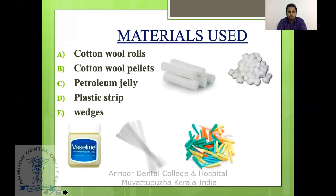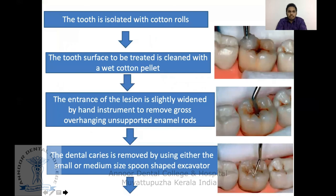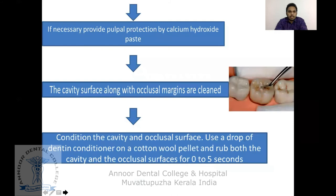The procedure for Atraumatic Restorative Treatment: First, the tooth is isolated with a cotton ball. The tooth surface to be treated is cleaned with a wet cotton pellet. The entrance of the lesion is slightly widened by hand instruments — removing unsupported enamel or widening the cavity. The dental caries is then removed using either a small or medium-sized spoon excavator.